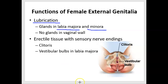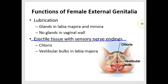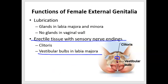Also present in the female external genitalia is erectile tissue with sensory nerve endings. I've already mentioned the clitoris, which is anterior. But there's also some very sensitive erectile tissue in the labia majora, called vestibular bulbs.